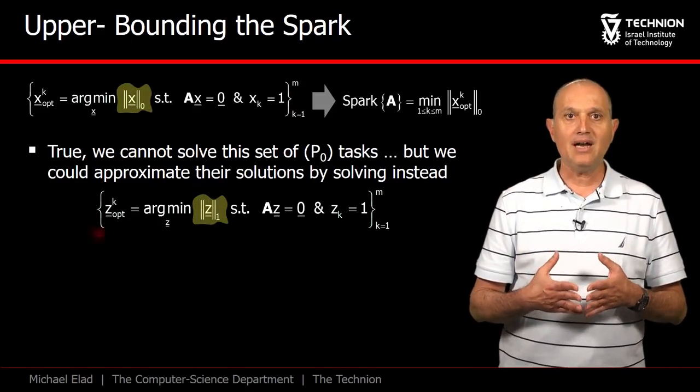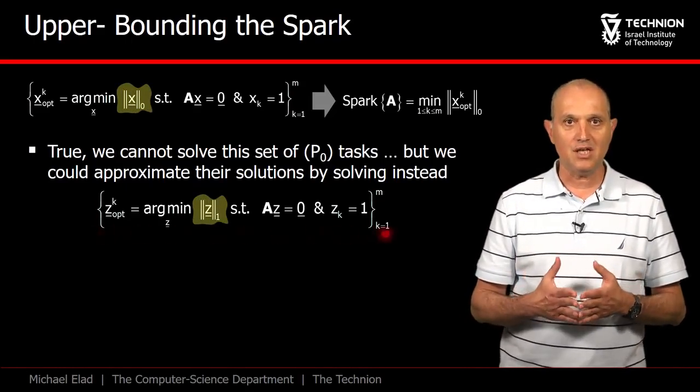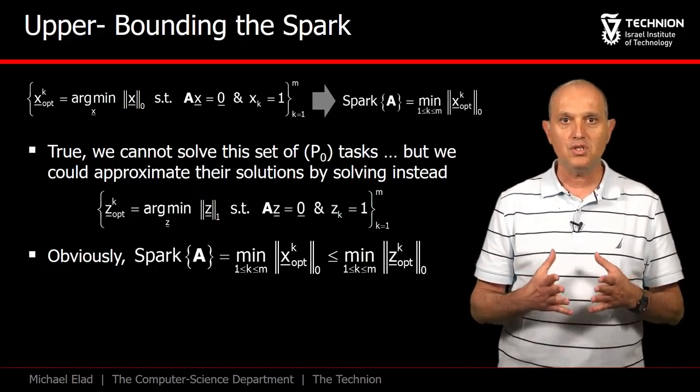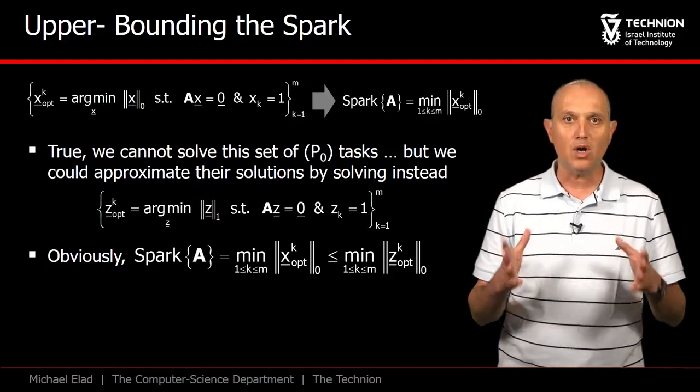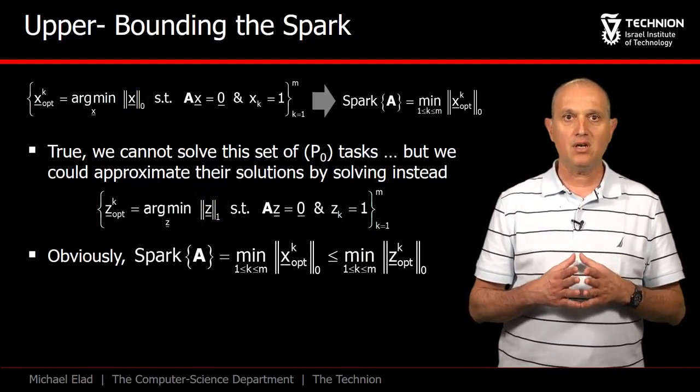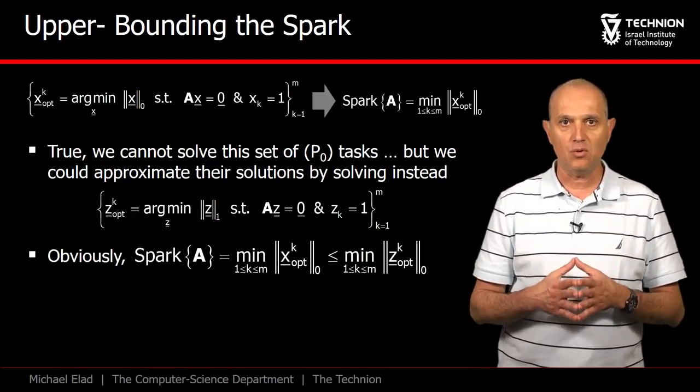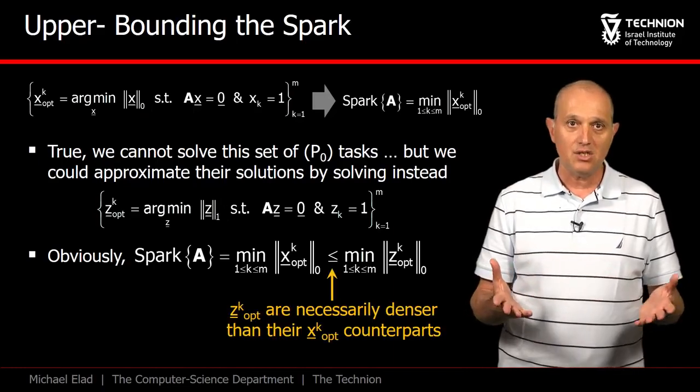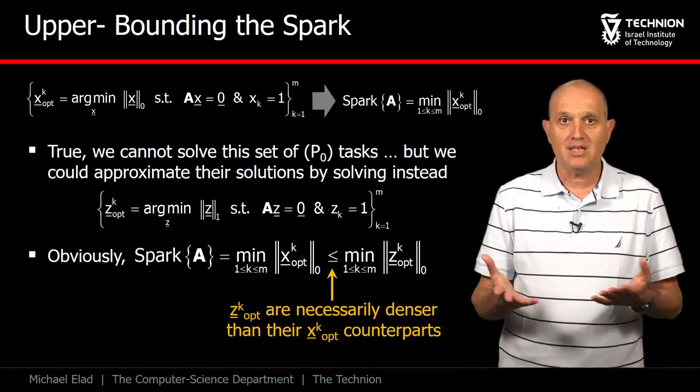Clearly, these are linear programming problems, and as such, they are manageable. So instead of searching the sparsest solution, we search for the shortest ones in L1. Thus, the minimal cardinality within this set of solutions stands as an upper bound to the true spark, since with the L1, the solutions are necessarily denser.